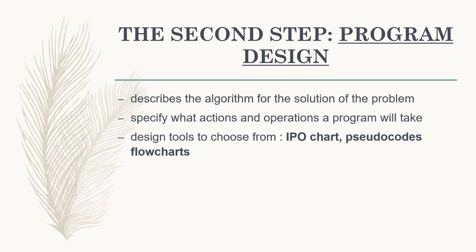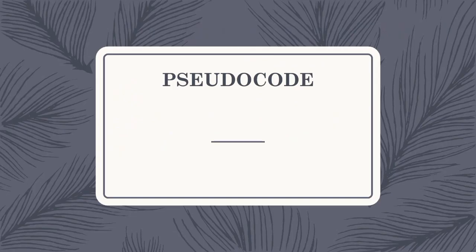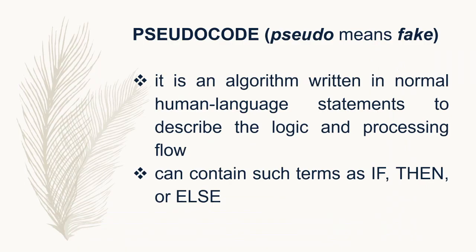Once you have analyzed the problem, you now need to design the program using these three tools — or you can choose one of them to solve the problem. For our first algorithm, we will discuss pseudo code. So what is pseudo code? Pseudo is a Latin word; pseudo means fake. So when we say pseudo code, it means fake code.